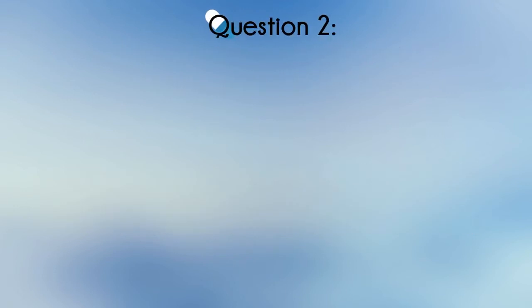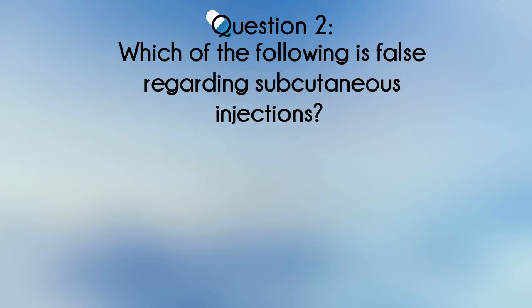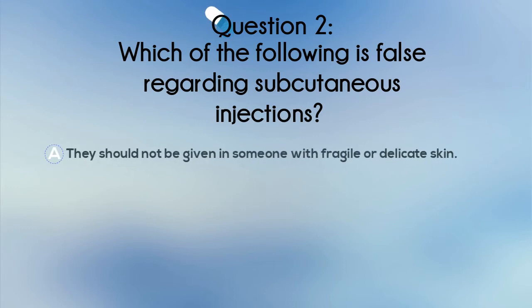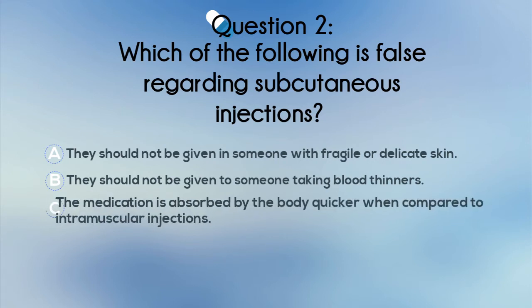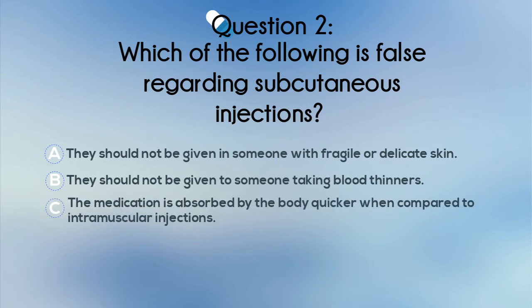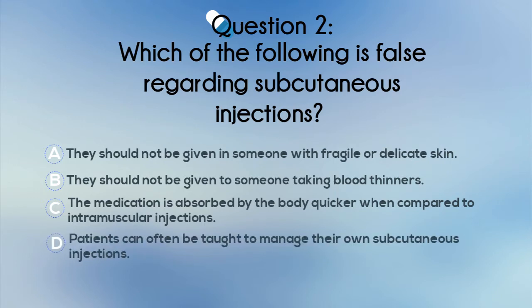Question 2. Which of the following is false regarding subcutaneous injections? A. They should not be given in someone with fragile or delicate skin. B. They should not be given to someone taking blood thinners. C. The medication is absorbed by the body quicker when compared to intramuscular injections. Or D. Patients can often be taught to manage their own subcutaneous injections.